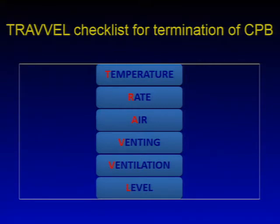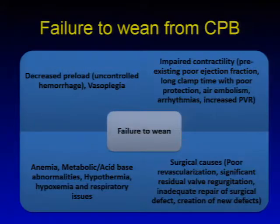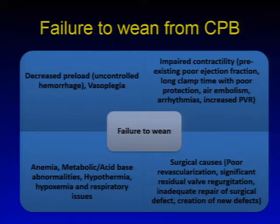The TRADE checklist is used for termination of CPB: T for temperature, R for rate, A for adequate air de-airing (venting should be removed before coming off bypass), D for de-airing completed, and ventilation should be initiated before coming off bypass. E for electrolytes — these should be checked and the patient table leveled before CPB termination. Failure to wean from CPB may relate to decreased preload, vasoplegia, impaired contractility, or systemic factors like anemia, metabolic acid-base abnormalities, hypothermia, hypoxemia, and respiratory issues, as well as surgical causes including poor revascularization, significant residual valve regurgitation, inadequate repair, or creation of new defects.